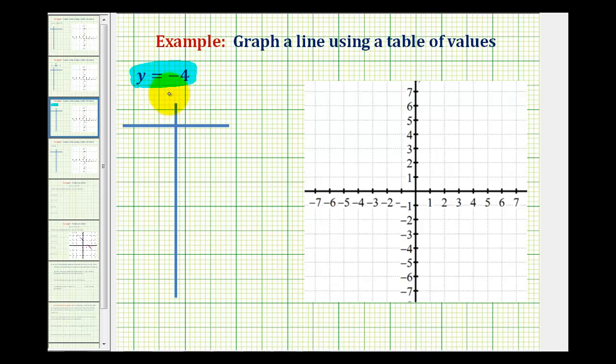A line containing one variable is either going to be a vertical line or a horizontal line. I always recommend that students make a table of values until they're sure about what type of line this would be.